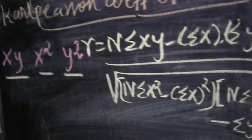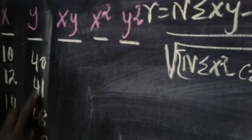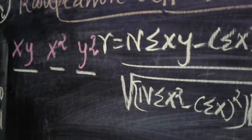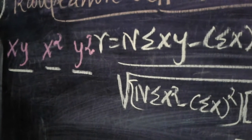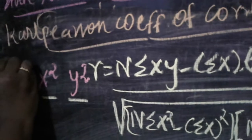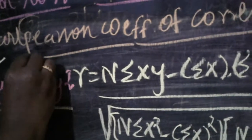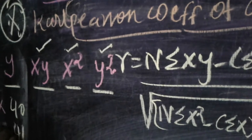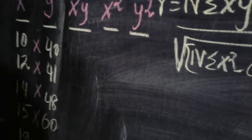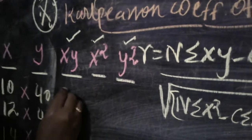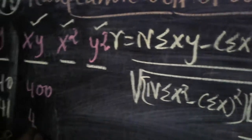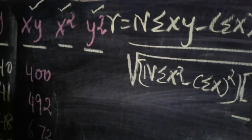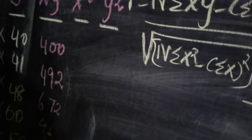In the question, x values and y values are already given. We need to calculate three new columns: xy, x², and y². The xy column means each x value multiplied by its corresponding y value. For example: 10×40 = 400, 12×41 = 492, 14×48 = 672, 15×60 = 900.